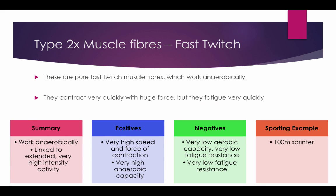Type 2X Muscle Fibres are the pure fast twitch muscle fibers which work anaerobically without oxygen. They contract very quickly with huge force but fatigue very quickly. They are linked to very high intensity activity. The positives are they have very high speed and force of contraction and a very high anaerobic capacity. The negatives are very low aerobic capacity and very low fatigue resistance. A sporting example is the 100m sprinter — the fast twitch muscle fibers contract very quickly, allowing the athlete to sprint off the blocks. For example, Usain Bolt will power up and go as fast as he can across the finish line.